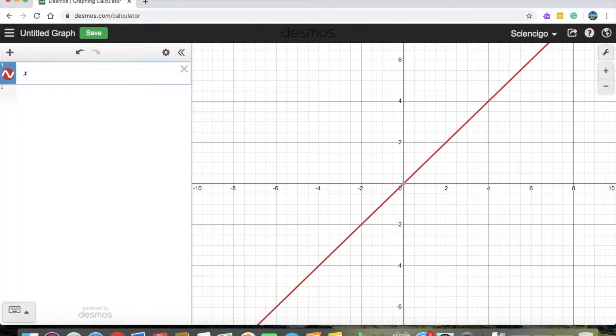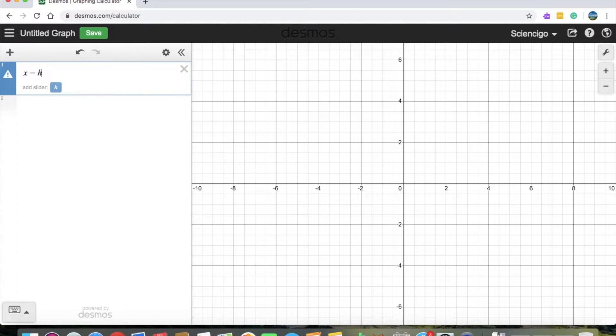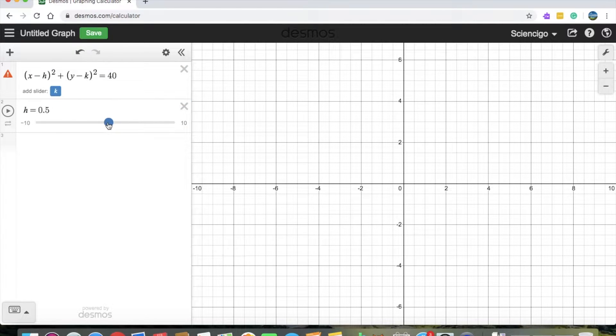So we start off with the equation of a circle which is (x - h)² + (y - k)² which let's say equals 40. Now we will set up the values for h and k. I will set h to 0 for now and move on to k.